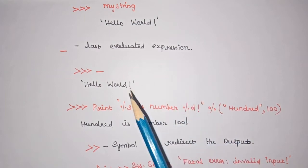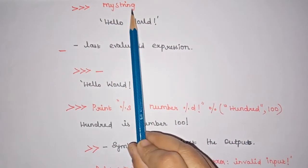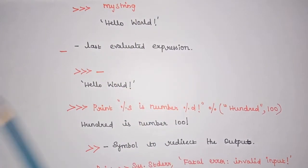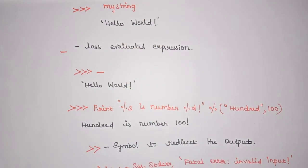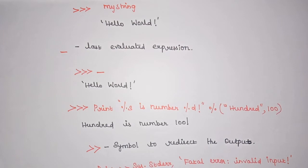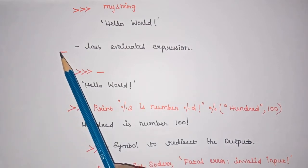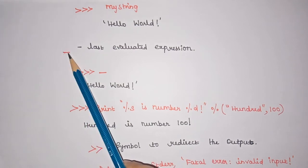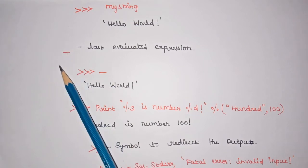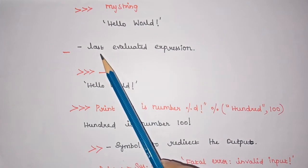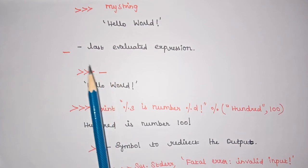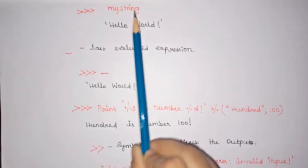If you are not using a print function and you simply type the variable name, it also gives the result — the value stored inside that variable — but along with single quotes. Additionally, if you use underscore simply, without any function or name, it checks for the last evaluated expression and produces its output. Here, the last evaluated expression is my_string, so it produces Hello World.